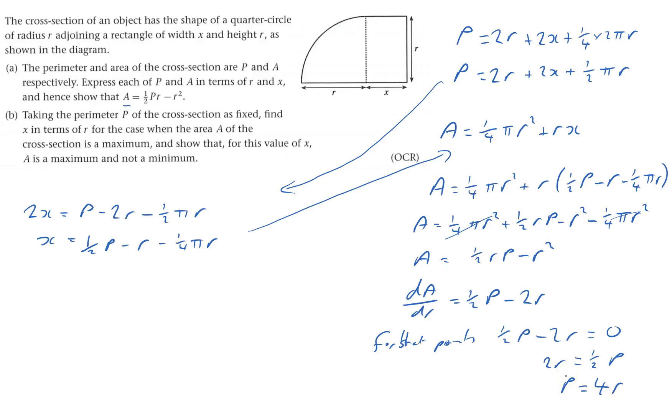And now show that for this value of x. So I've got to find x in terms of r. Well, I've got x here, I want to get rid of the P, so put P equals 4r into here, and that'll give me x equals a half of P, which will be 2r minus r minus a quarter πr.